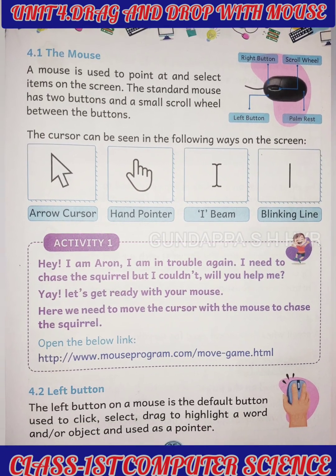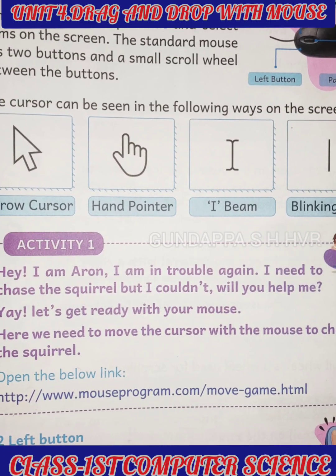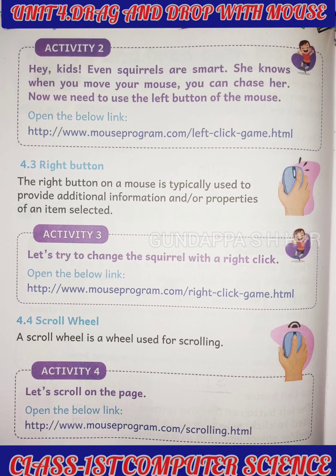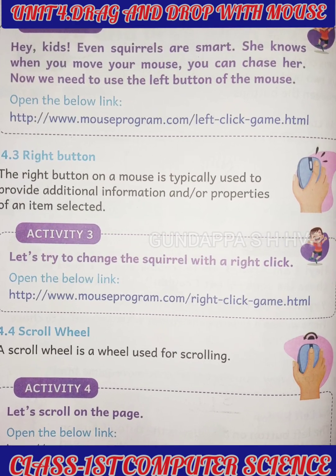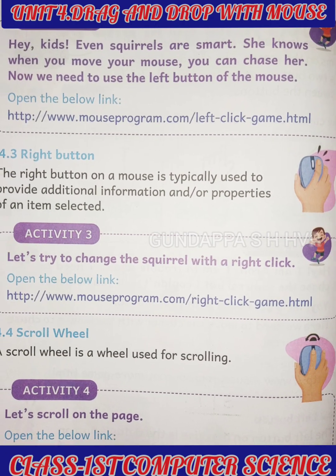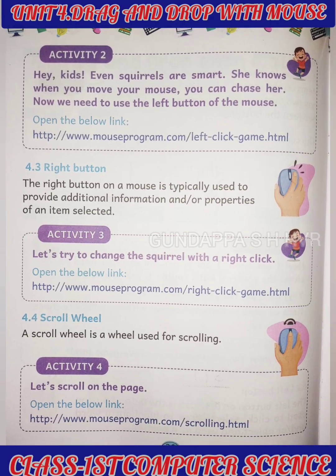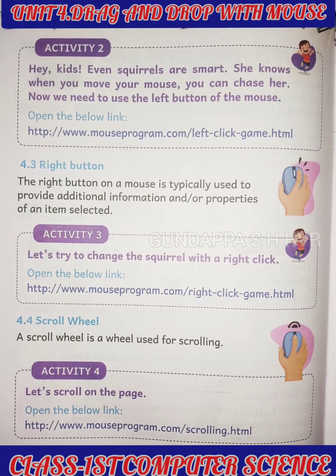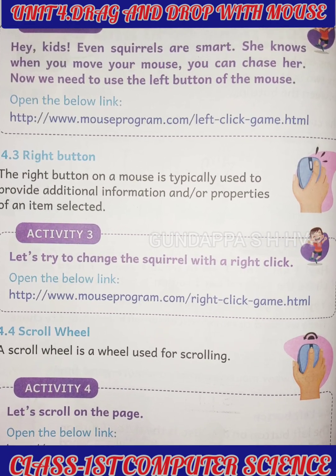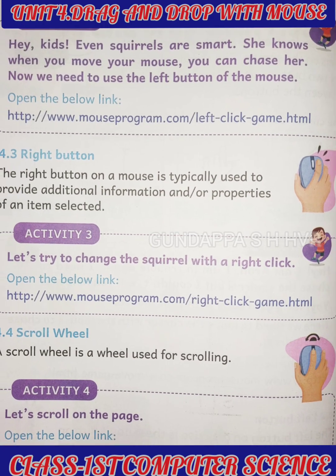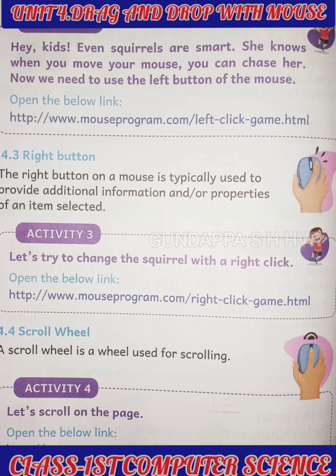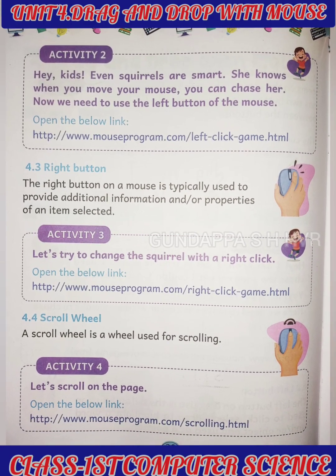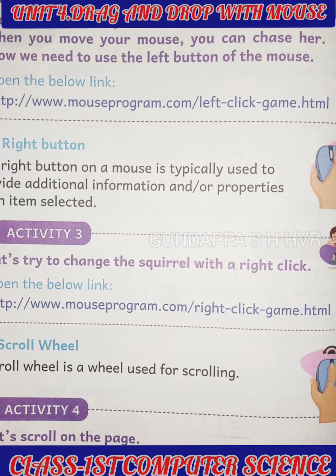The right button on a mouse is typically used to provide additional information and properties of a selected item. We rarely use the right button. Whenever you refresh your computer or right-click, many options are available such as open, view, and others. So only in rare cases do we use the right button.